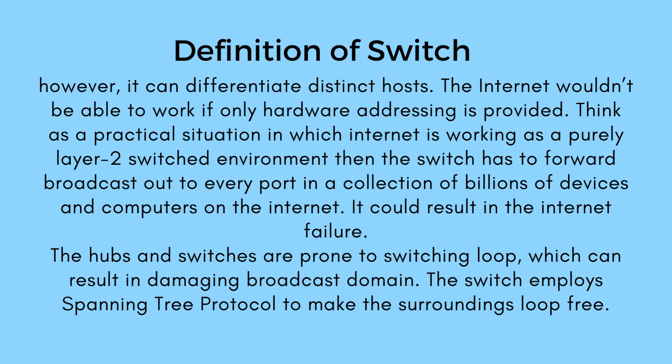Think of a practical situation in which the internet is working as a purely layer 2 switched environment. Then the switch has to forward broadcast out to every port across billions of devices and computers on the internet, which could result in internet failure. Hubs and switches are prone to switching loops, which can result in a damaging broadcast storm. The switch employs the Spanning Tree Protocol to make the environment loop-free.